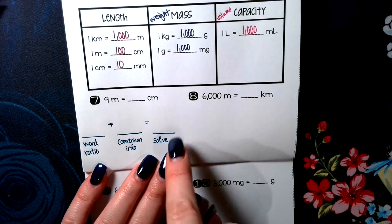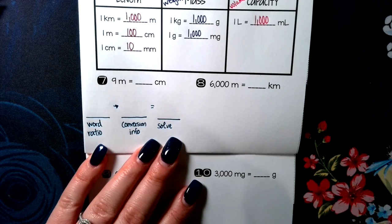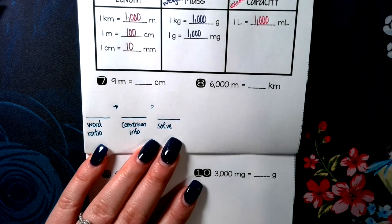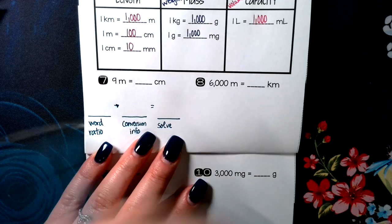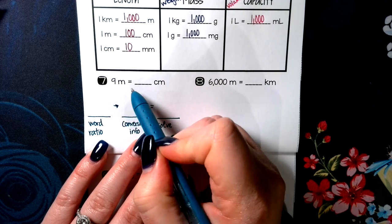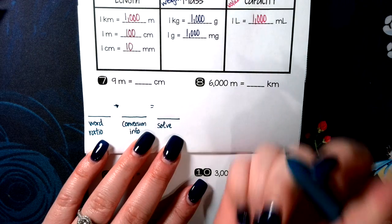Write these things on the bottom every time you solve these problems to help you remember what goes where. The more little things like this you do, the higher chance you have of getting the problem right. So problem number seven. It says I have nine meters.